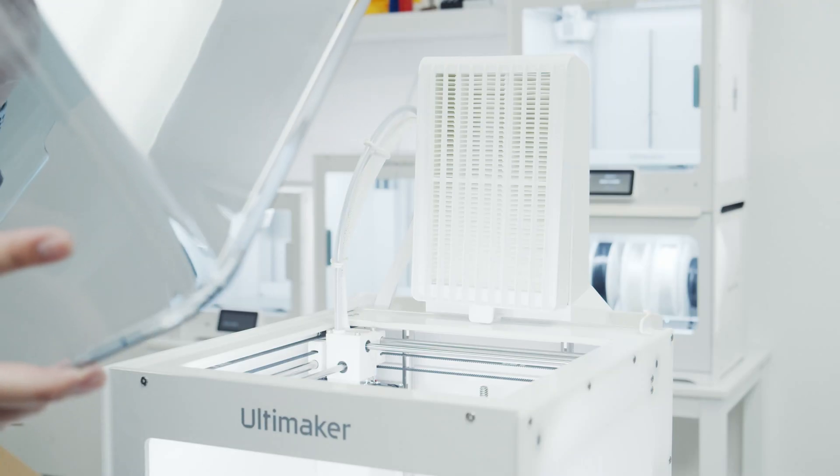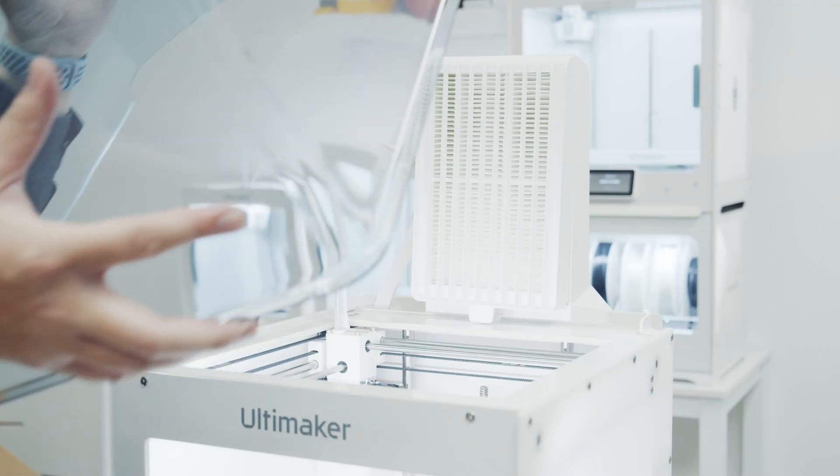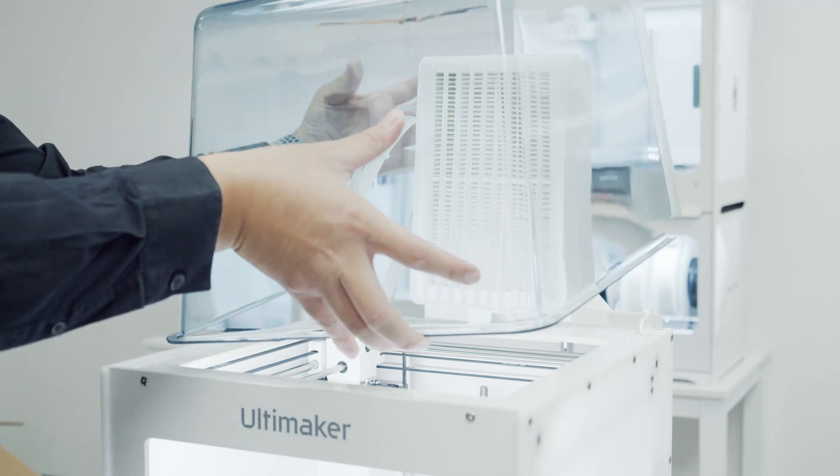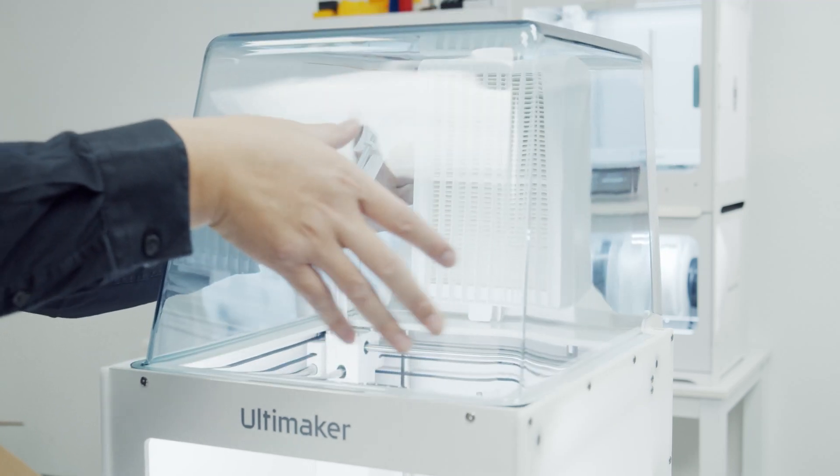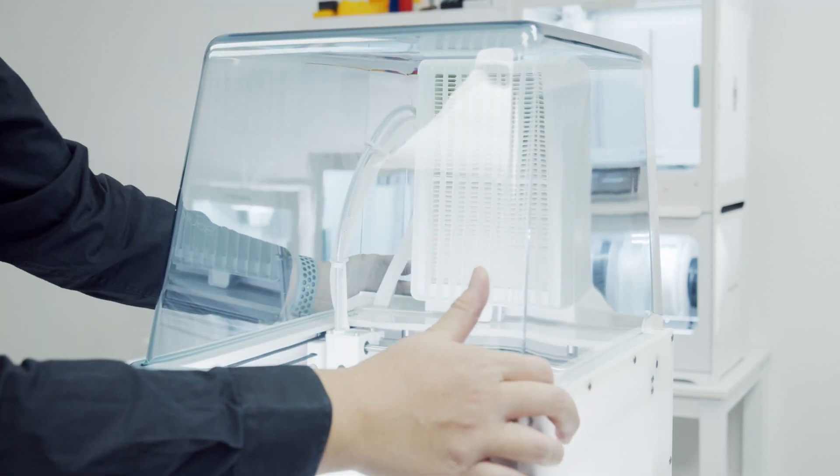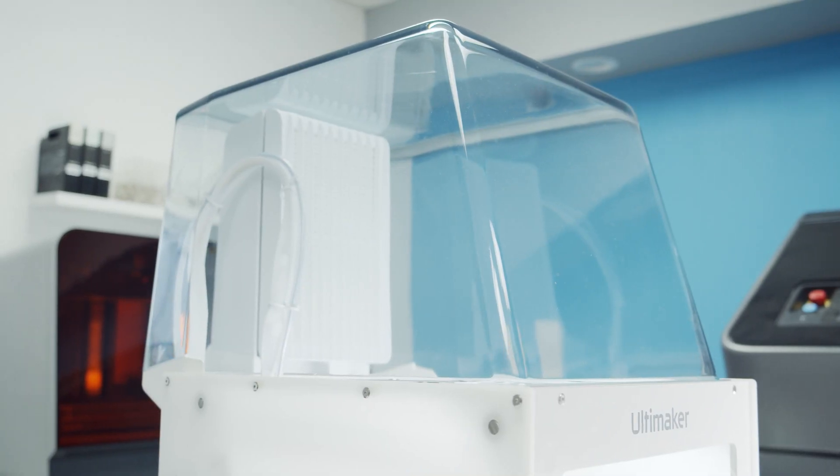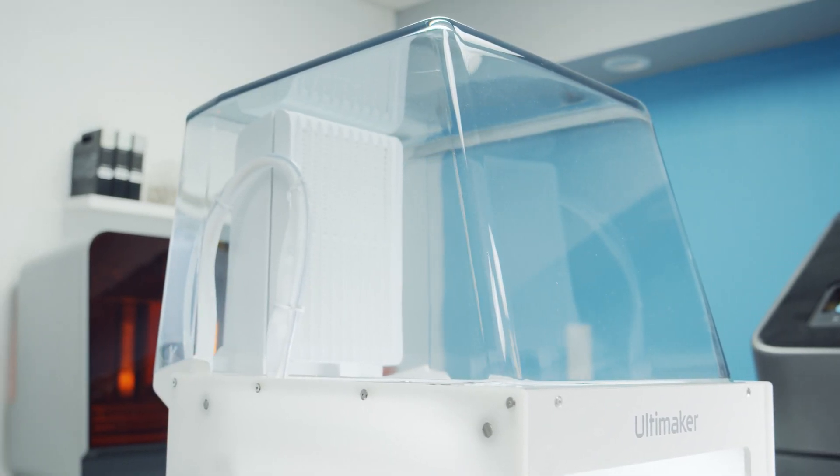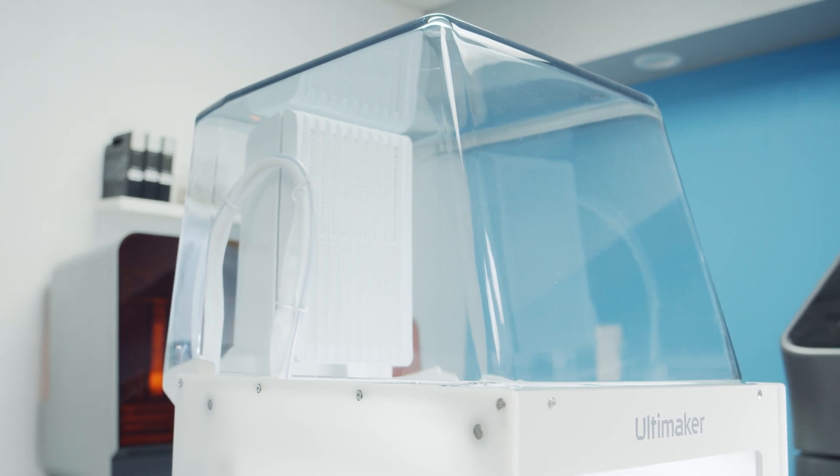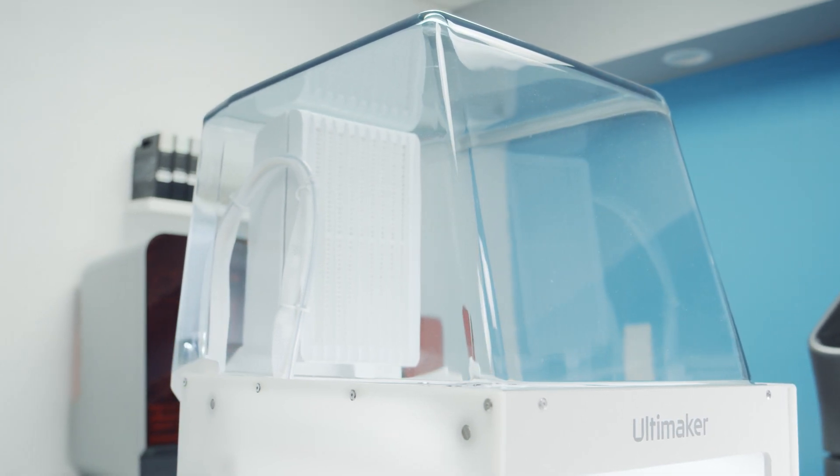We can now install the clear top mounted enclosure. For this, it's very simple. It just sits nicely on top of the printer with a cutout for the fan of the Air Manager. With the Air Manager installed, you'll get more repeatable, stronger, and higher quality prints due to the more consistent air temperature.